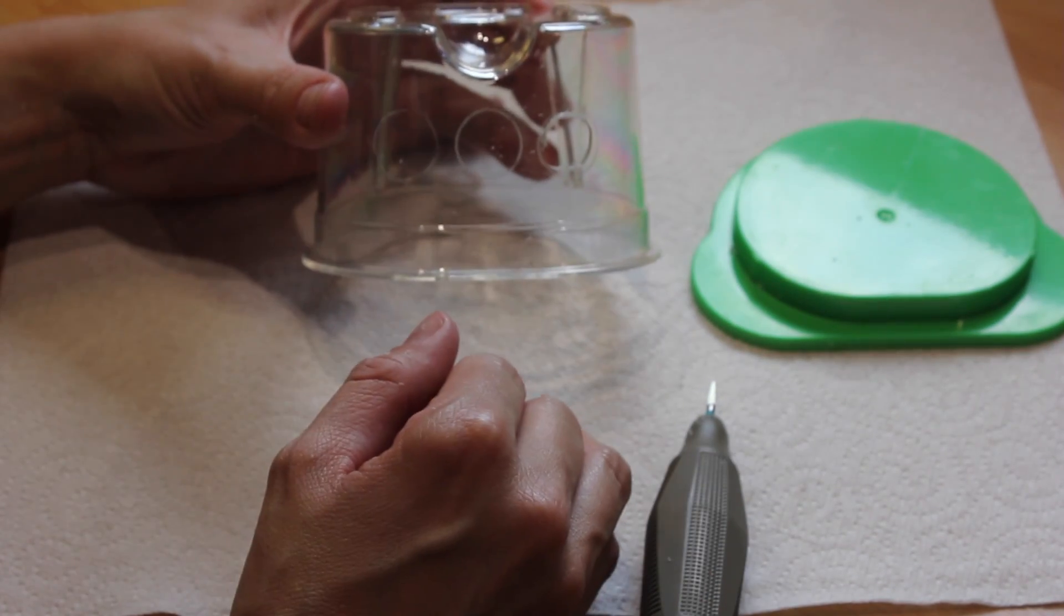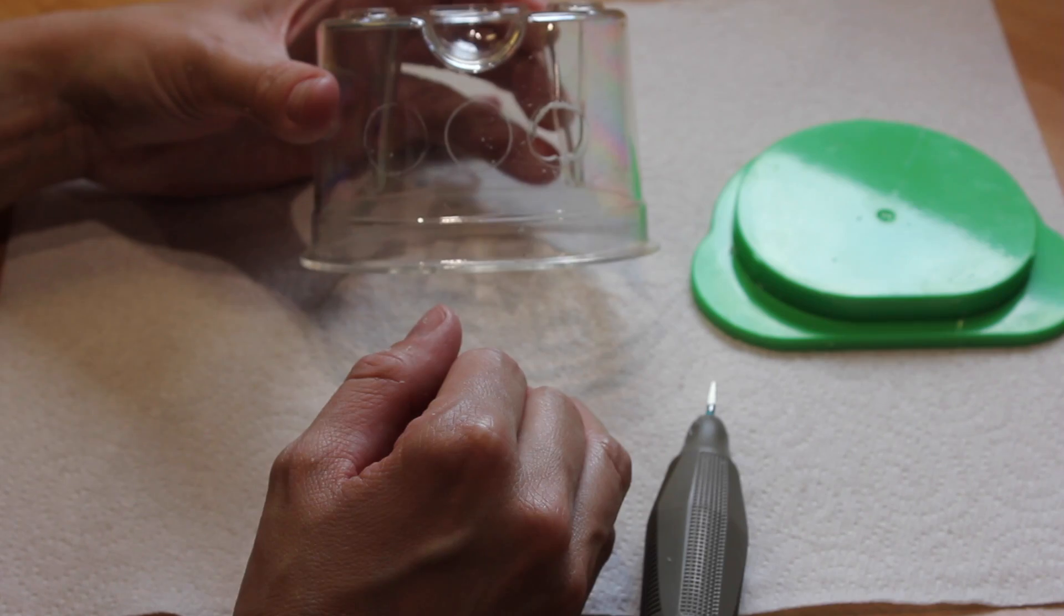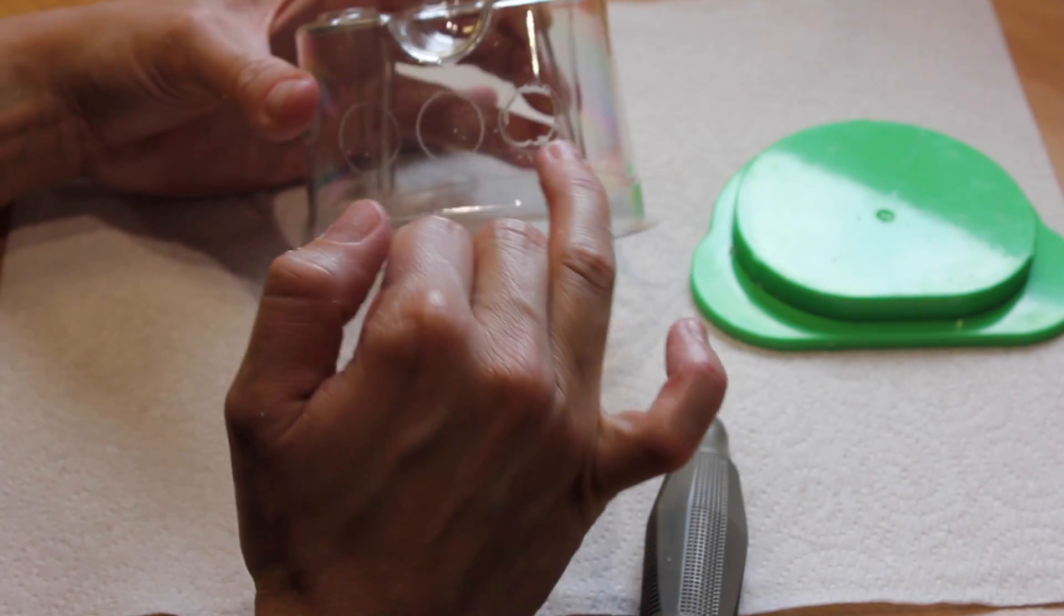Do the same with the other two and then transfer to a larger acrylic burr to smooth out the holes and take them right to the line.